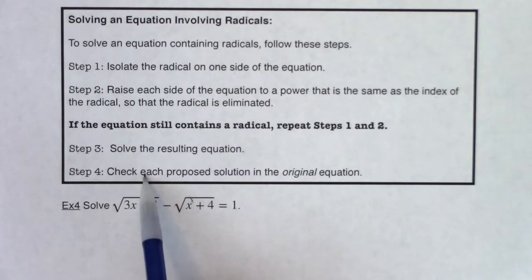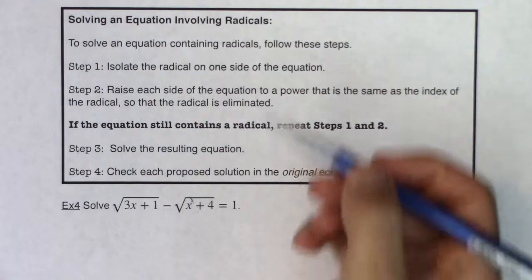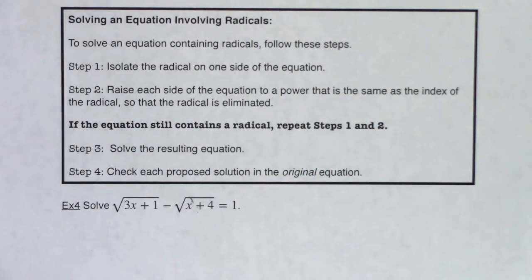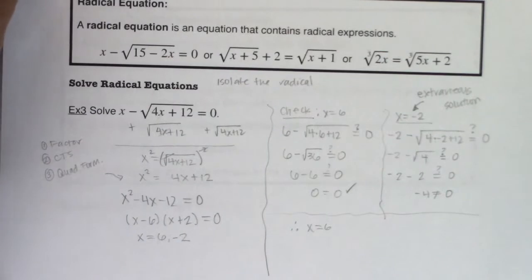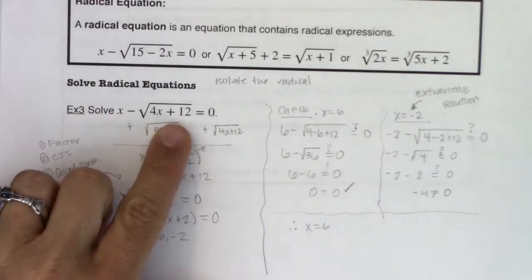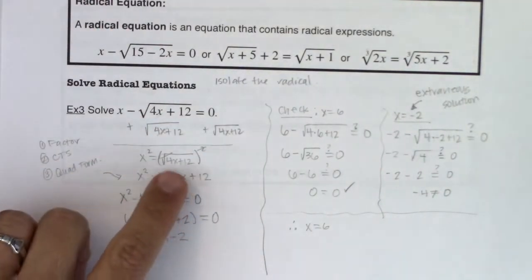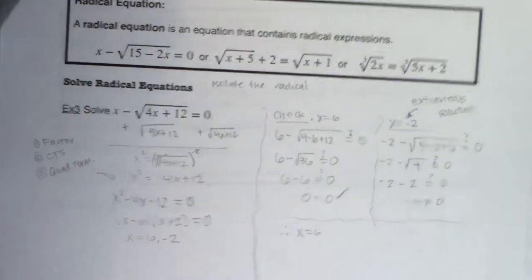Let me talk a little bit more about each of these and refer you back to example 3 when we practice these. Isolate the radical on one side of the equation. If you remember from example 3, we did that — we had the square root of 4x plus 12 on the left side of the equation, so we moved it over so it was all by itself. We isolated it.